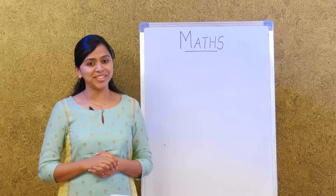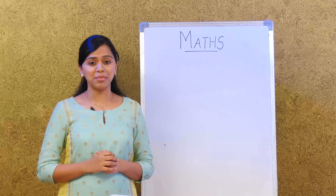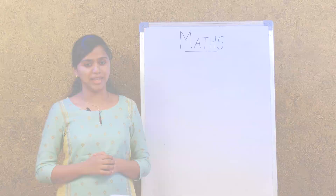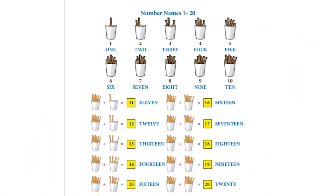Very good — I believe you remember the numbers very well. Now let's look at number names. Do you remember the number names? Let's start with one. One is O-N-E, two is T-W-O, three is T-H-R-E-E, four is F-O-U-R, five is F-I-V-E.